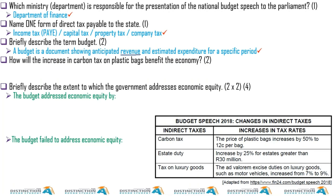If the government doesn't have enough money, state debt comes in — they have to borrow. They can borrow from the general public through government bonds; the public purchases the bonds and gets paid with interest after some time.